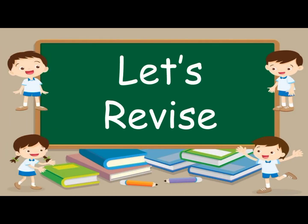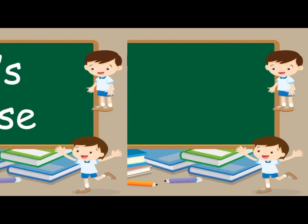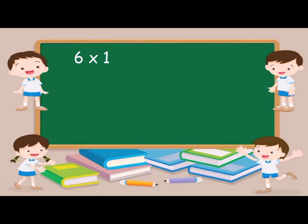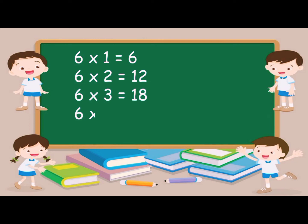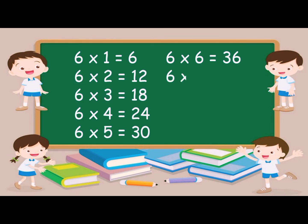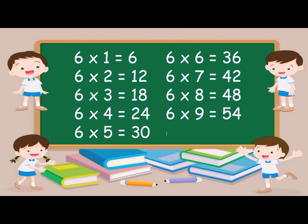Let's revise. Six ones are six. Six fives are twenty-four. Six fives are thirty. Six sixes are thirty-six. Six sevens are forty-two. Six eights are forty-eight. Six nines are fifty-four. Six tens are sixty.